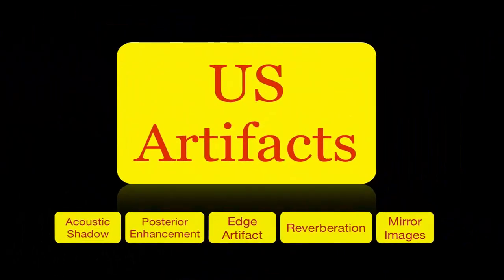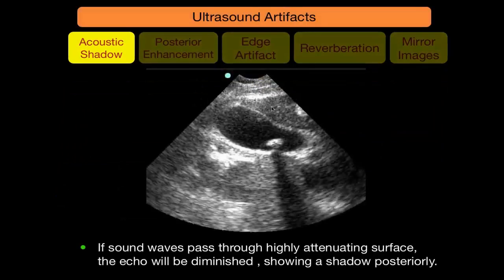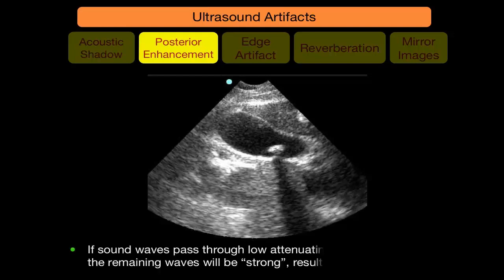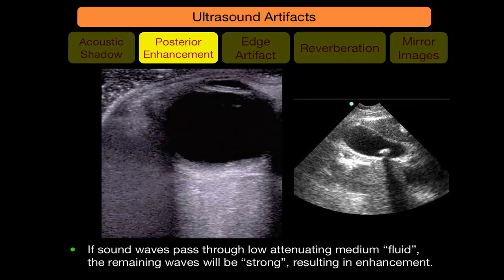Regarding ultrasound artifacts: Acoustic shadow — sound passes through a highly attenuating material like a gallbladder stone, which decreases the amplitude of the ultrasound waves, reflected as a posterior black shadow. Posterior enhancement — the opposite: ultrasound passes through a low attenuating structure like fluid in the gallbladder, maintaining much of its amplitude, reflected as posterior enhancement. You can see this posterior to any fluid in the body, like in an eye exam with vitreous humor, or posterior to the urinary bladder.